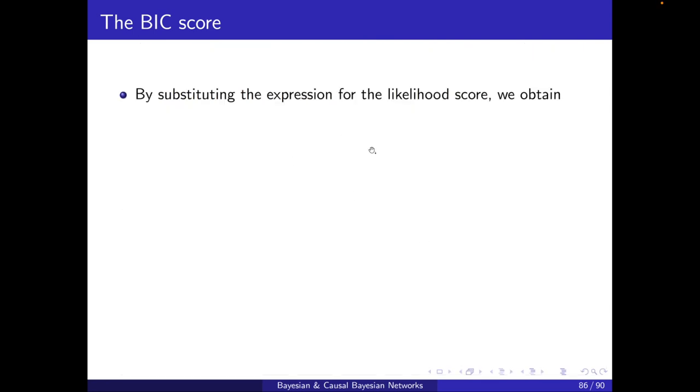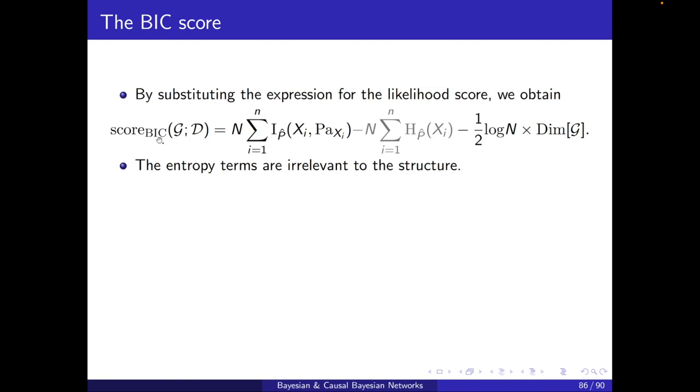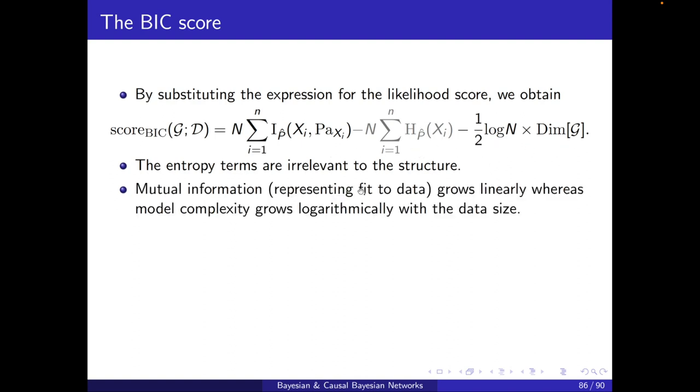By substituting the expression for the likelihood score, this is what I get for the BIC score. The mutual information terms, the entropy terms, and the model complexity times log(N). The entropy terms are irrelevant to the structure. We already discussed this in the likelihood score. Mutual information, which represents fit to data, grows linearly. Whereas, model complexity grows logarithmically with the data size.